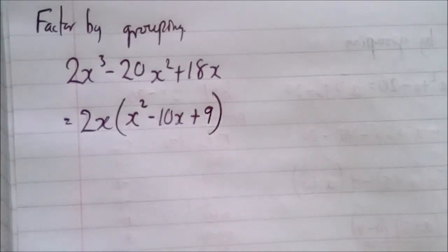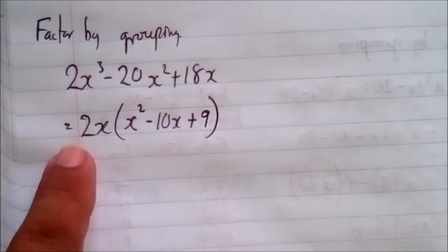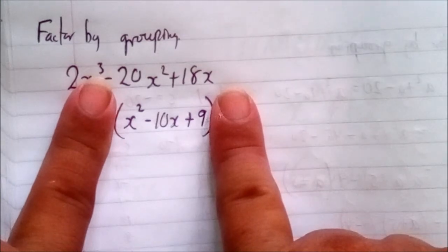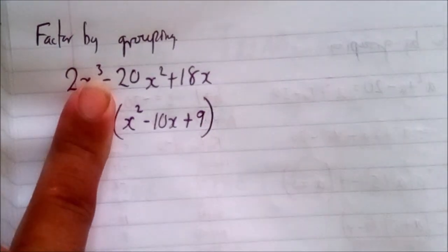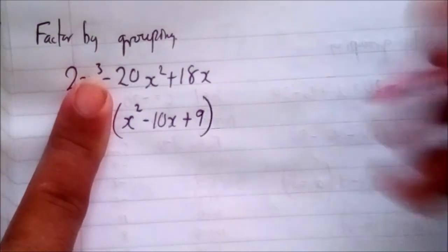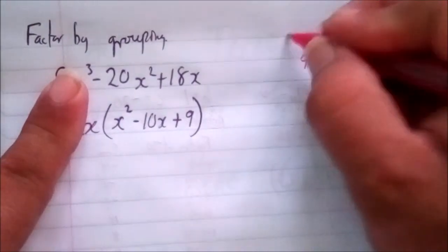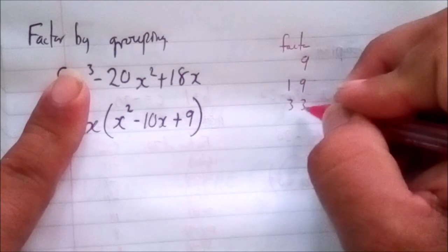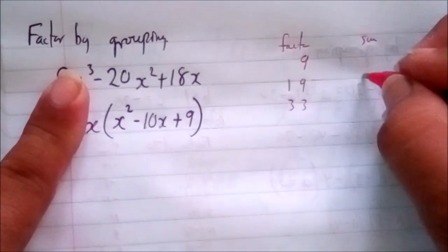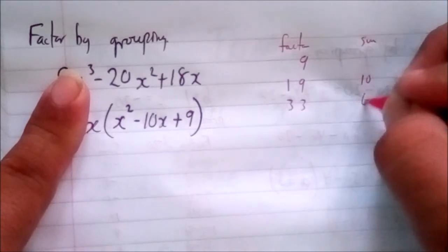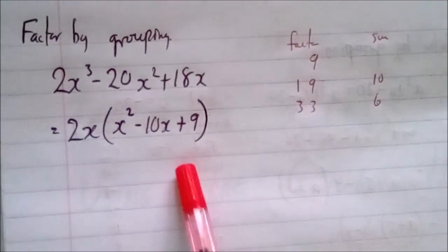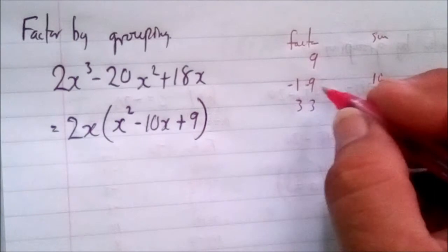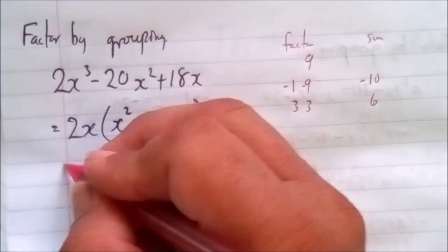Now concentrate only on the trinomial inside: x squared minus 10x plus 9. We find the factors of 9: 1 and 9 (sum: 10) or 3 and 3 (sum: 6). To get a positive 9 with a sum of negative 10, we use negative 1 times negative 9, since negative 1 plus negative 9 equals negative 10. That's our best combination.